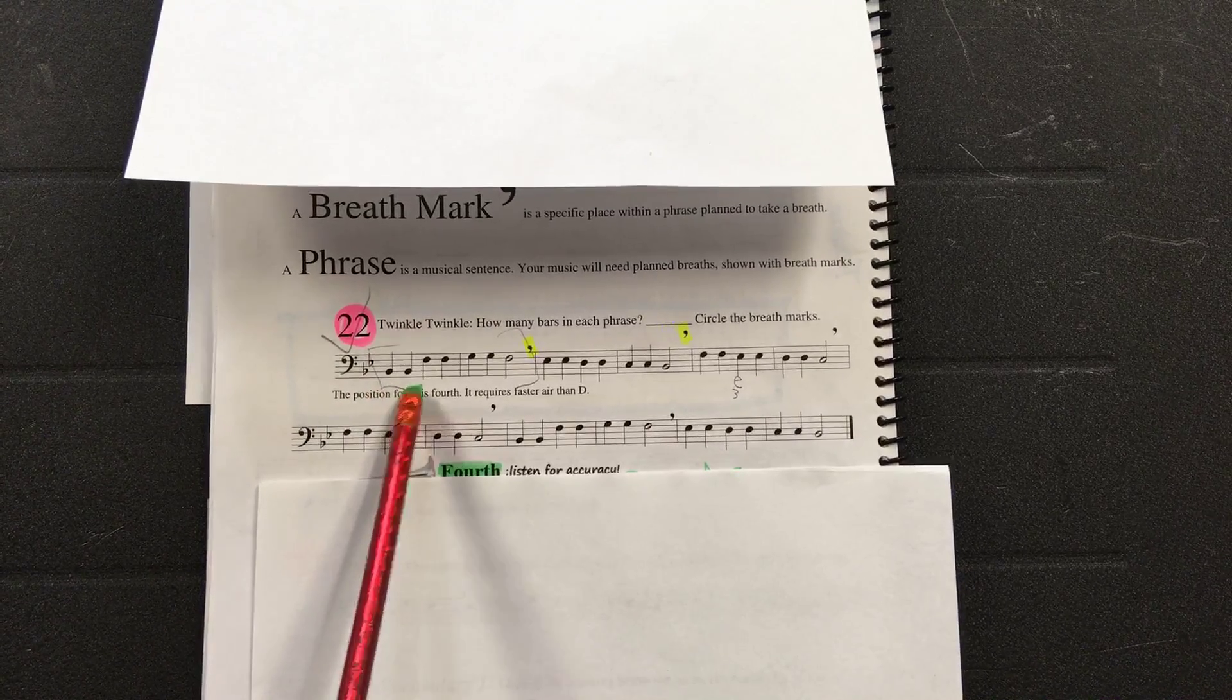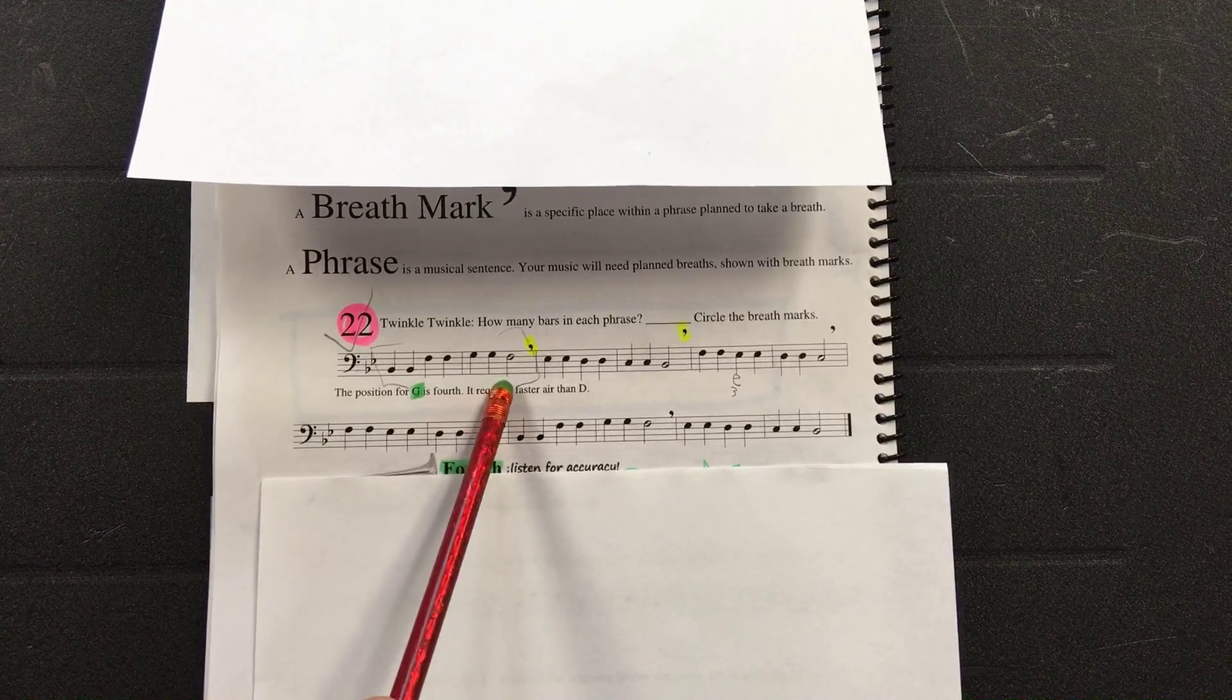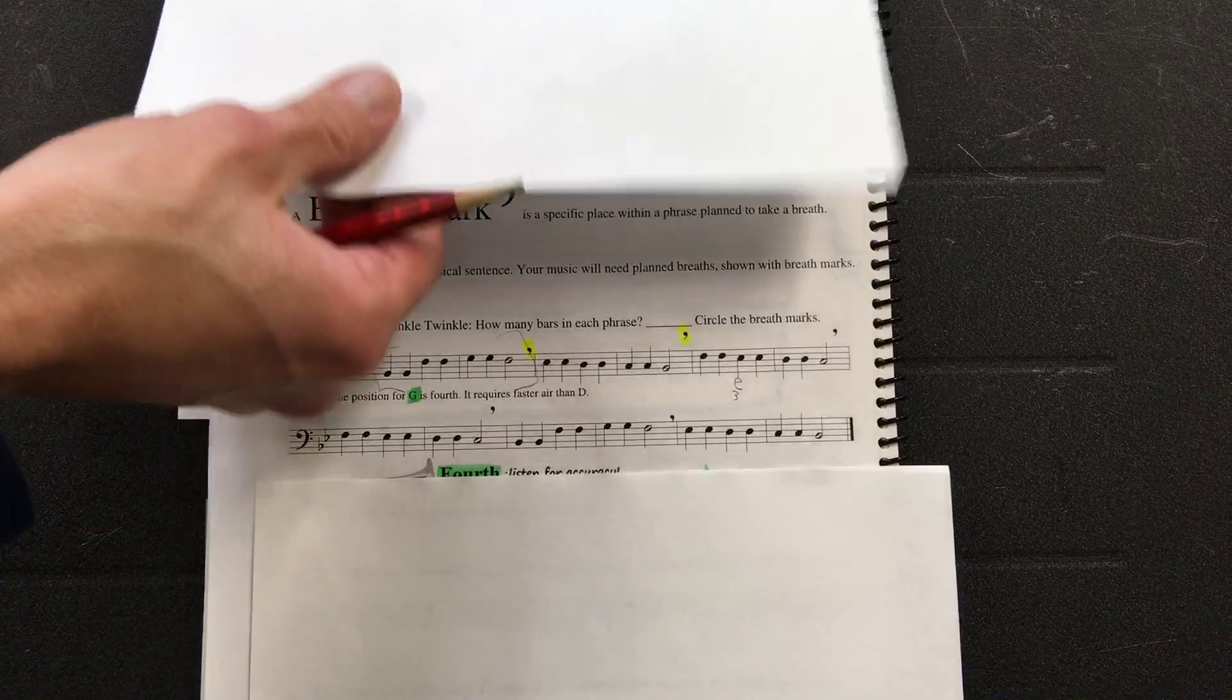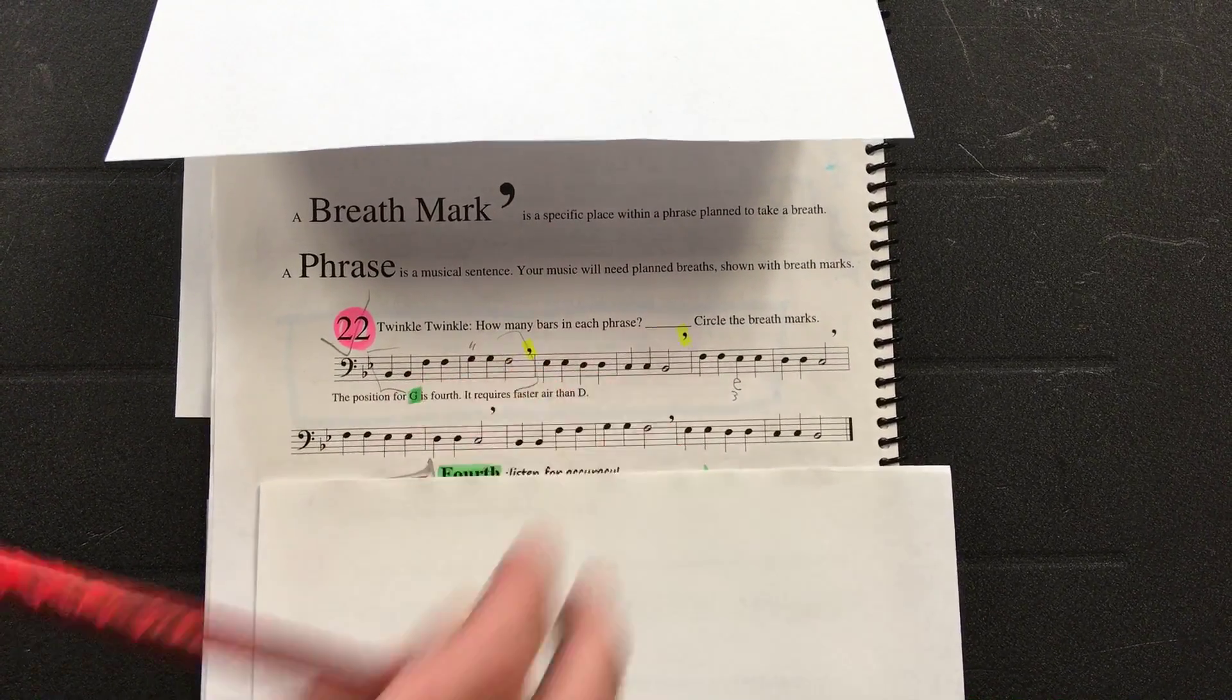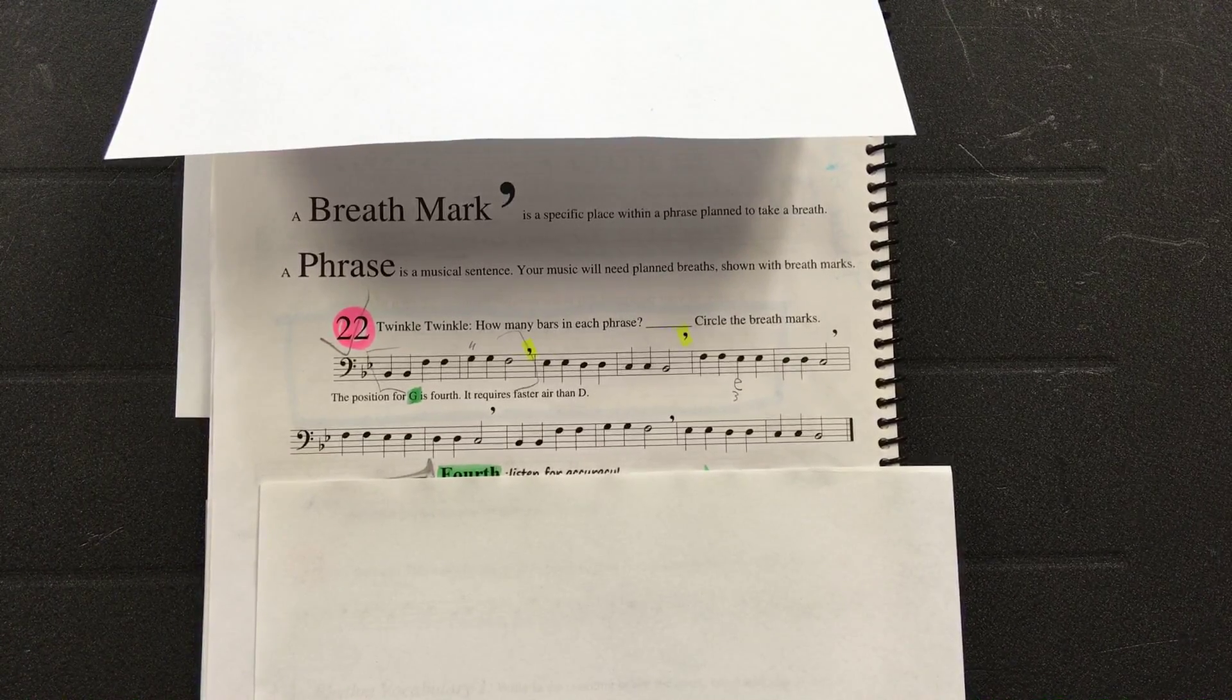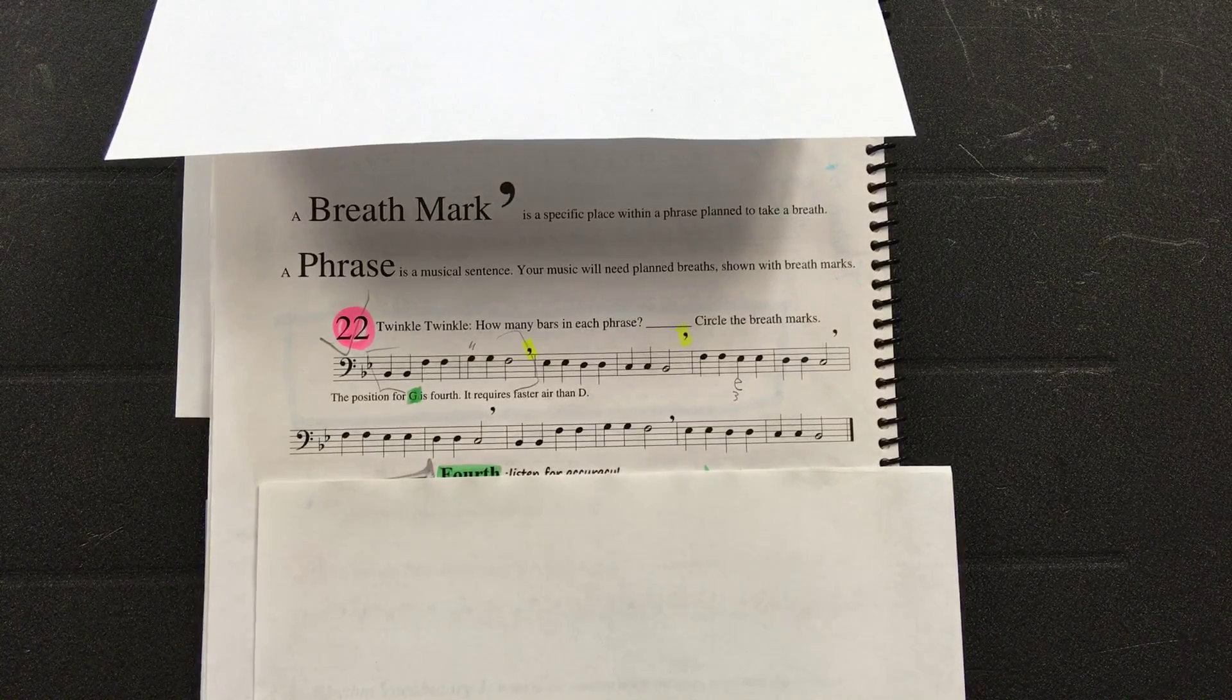B. B. F. F. G. G. F. Remember a G is fourth position. It's just like D. You're going to make that sour candy face. Try that G please. Good, good. Say the letters again of number 22.